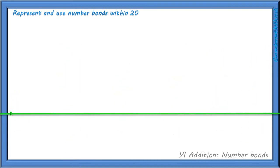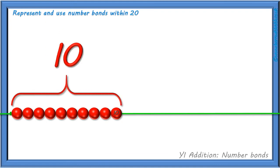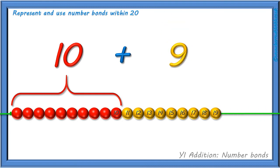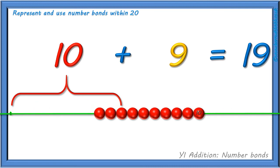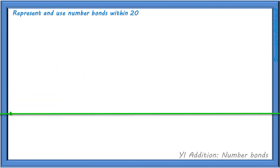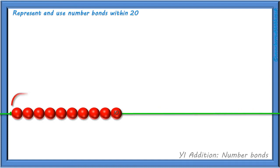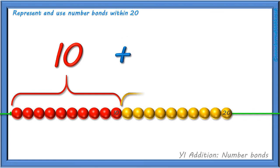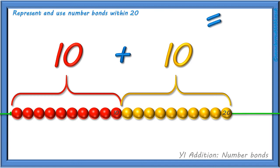So, how will we show 19 on our bead string? And how can we write it as a calculation? Again, we start with 10 red beads and add 9 yellow beads, which equals 19 beads altogether. And how will we show 20 on our bead string? Again, we start with 10 red beads and add 10 yellow beads, which equals 20 beads altogether.